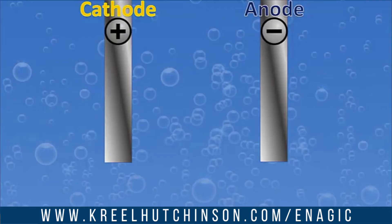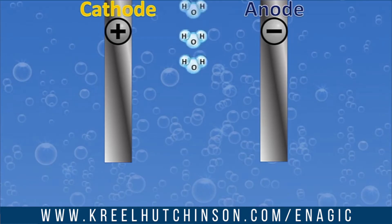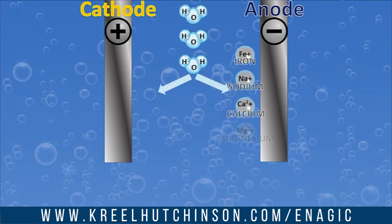We have an anode and a cathode, and this is kind of reversed if we're using batteries, but in this case because we are using alternating current, it's cathode and anode — and the anode is the minus. So as we run our water through our machines, the H2O triggers the iron, sodium, calcium, magnesium, and potassium — these are your positive minerals.